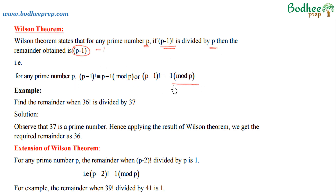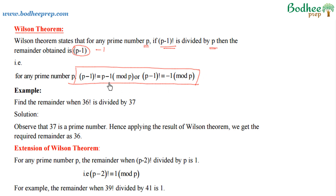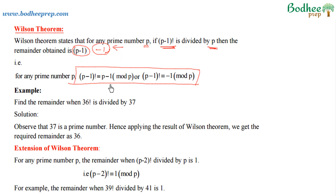So here is the format in which Wilson's theorem can be written. We can see that (p-1)! is congruent to (p-1) modulo p, or equivalently (p-1)! is congruent to -1 modulo p. That is what we mean by taking remainder as minus 1 — when (p-1)! is divided by p, the remainder is -1.